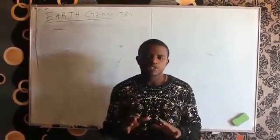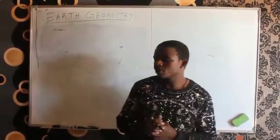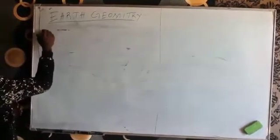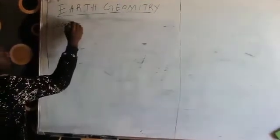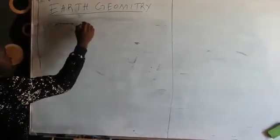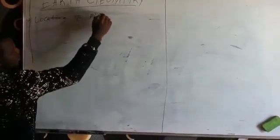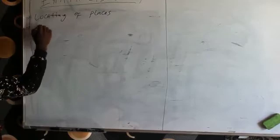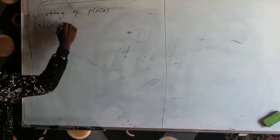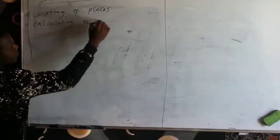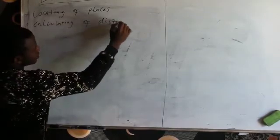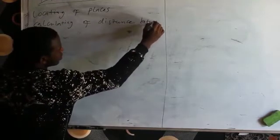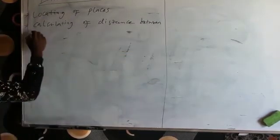So Earth's Geometry involves the locating of places, and it also involves the calculating of distance between two places.